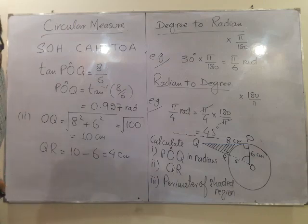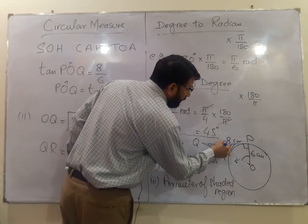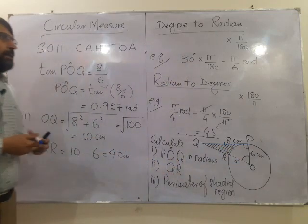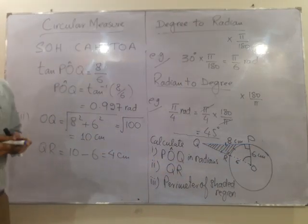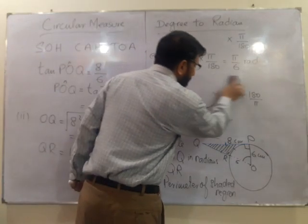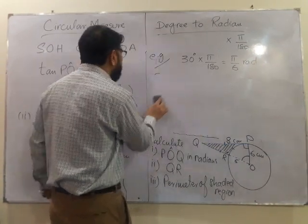Now he is looking for the perimeter of the shaded region which is consisting of this, this and this. Two of the lengths are already with us. So we are looking for the circular arc PR. Let us see how can we find this.